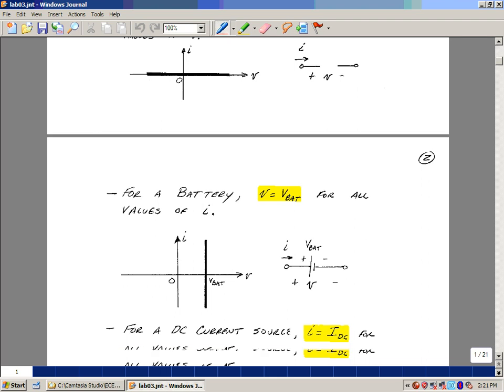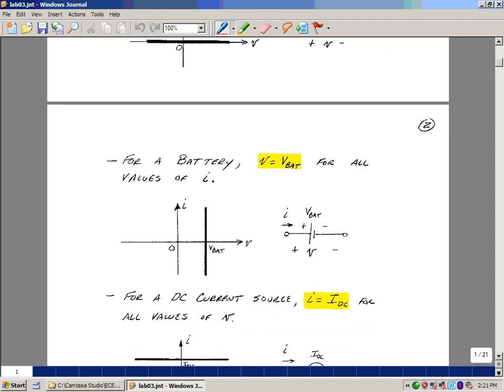If we had a battery whose value was, say, 9 volts, then you'd have the 9 volts here, but the current going into it could be positive, could be negative, could be zero.